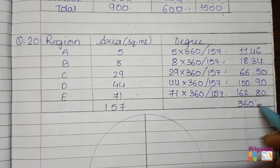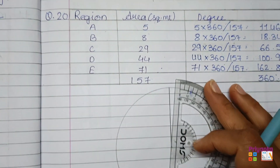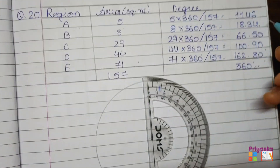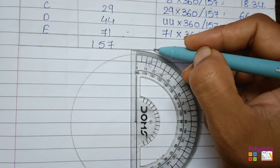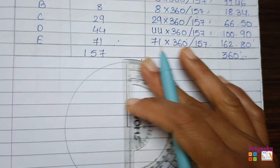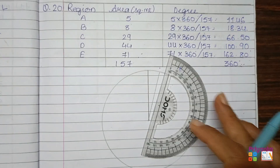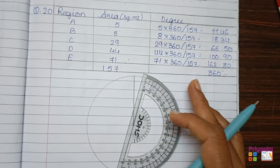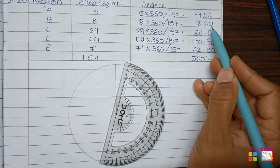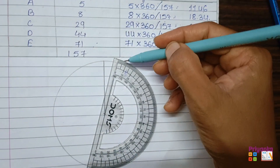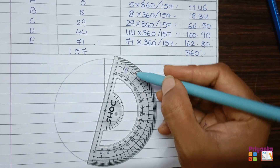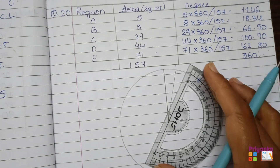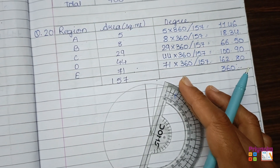Now hold your protractor at the center on the line. For 11.46 degrees, find a little more than 10 on the scale and mark it. Keep the line at 11. Next, find 18.34 — just before 20 on the scale — and mark that line as well.